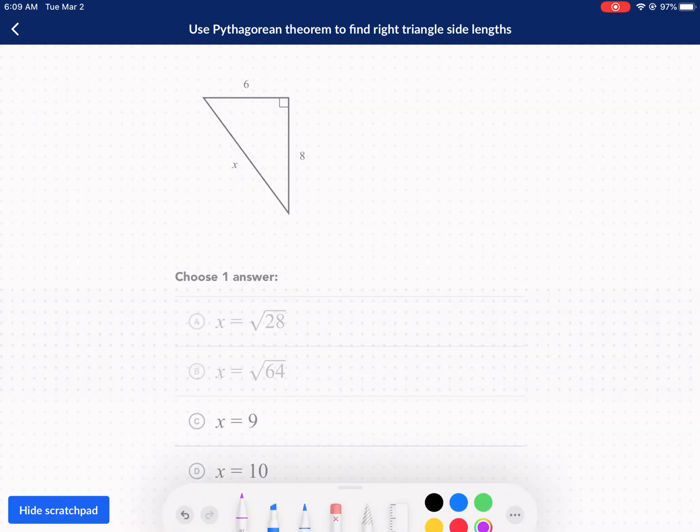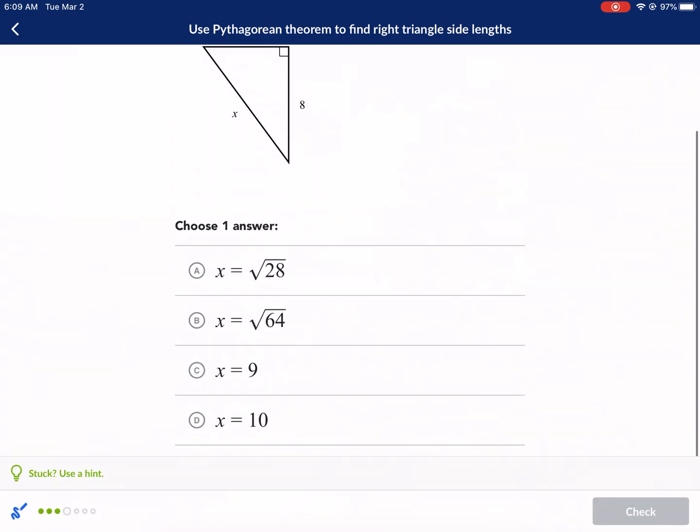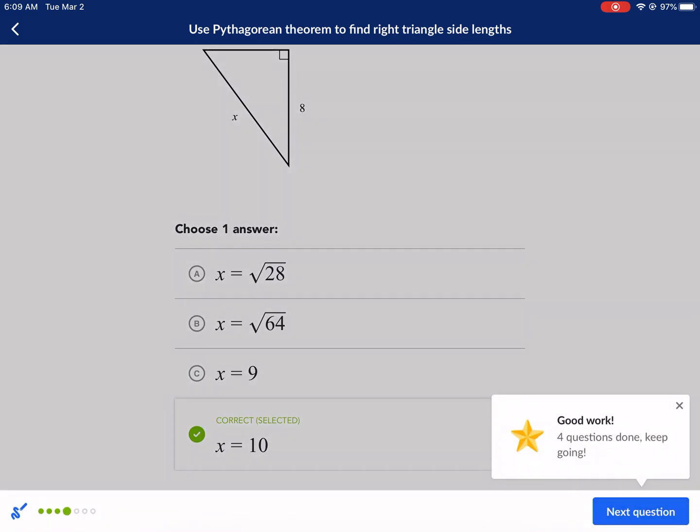This time it's a hypotenuse that we're missing, so we're not going to subtract, we're just going to add. This is our missing hypotenuse. So we're going to do 36 plus 64, and what is that equal to? It equals x squared. So this is 100 equals x squared, so take the square root, and we get x equals 10. Let's see that option, letter D.